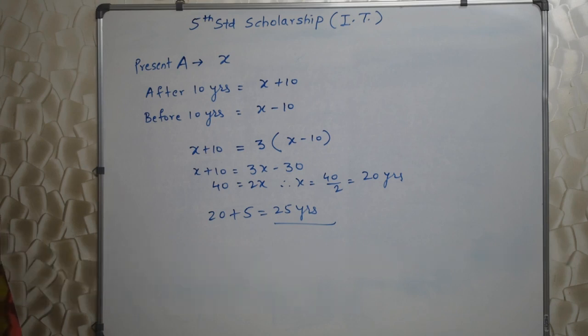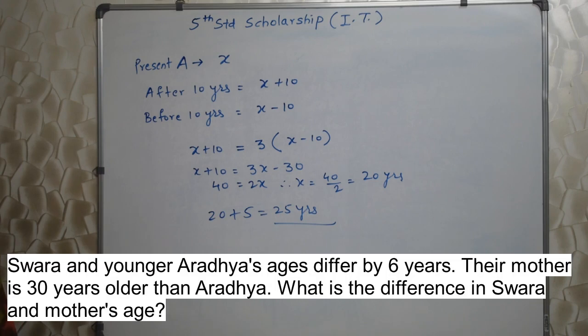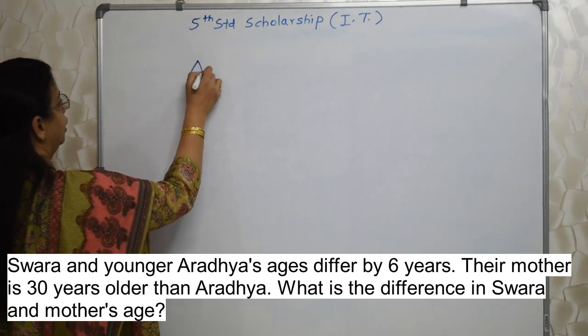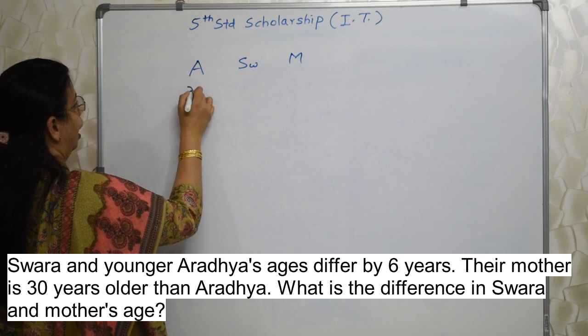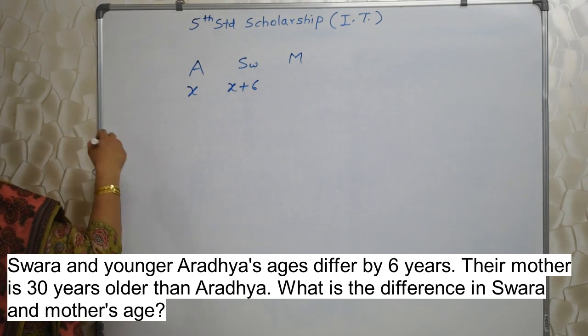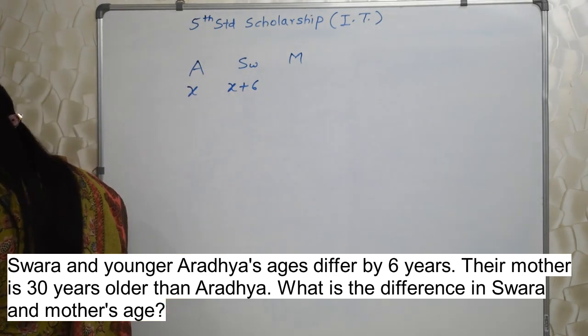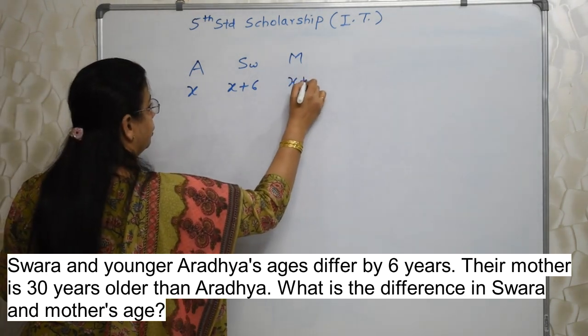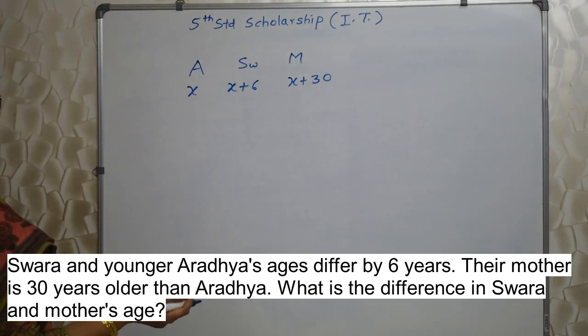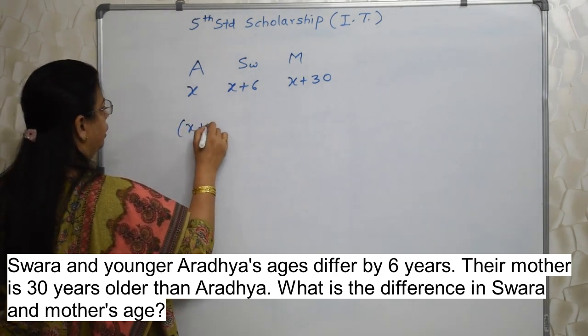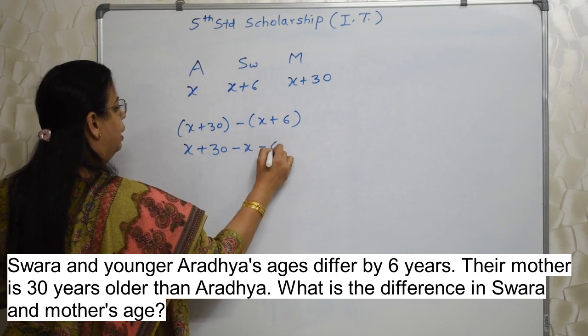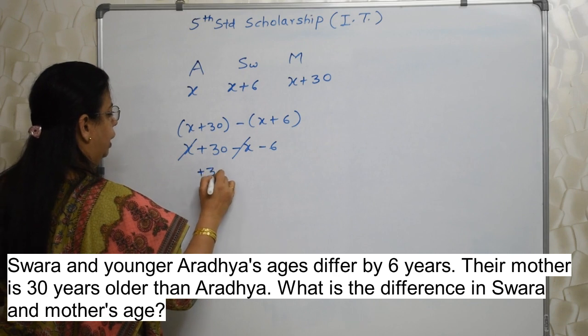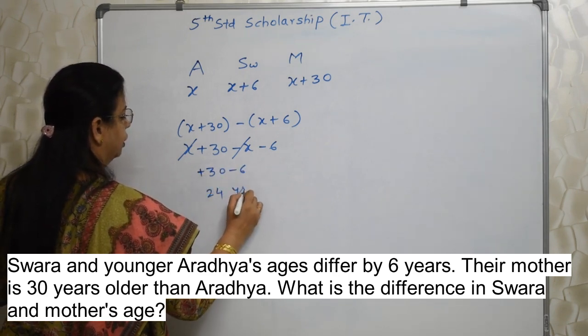Next sum will appear on your screen. Swara and younger Aradhya's age differ by 6 years. Their mother is 30 years older than Aradhya. What is the difference in Swara and mother's age? There is Aradhya, Swara and mother. They are saying Aradhya is younger than Swara by 6 years. So if Aradhya is x, Swara must be x plus 6. And mother is 30 years older to Aradhya, so she must be x plus 30. Now they want us to find out the difference between mother and Swara. Mother is x plus 30 minus Swara x plus 6. Minus x plus x gone, so plus 30 minus 6, answer is 24 years.